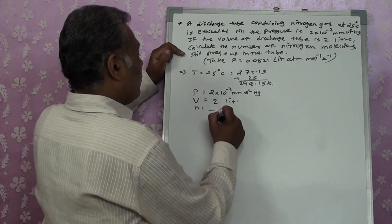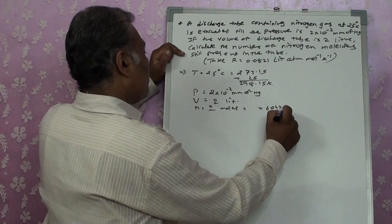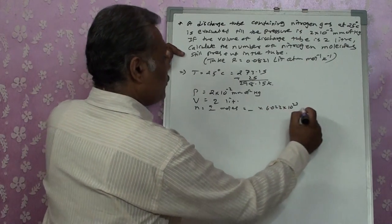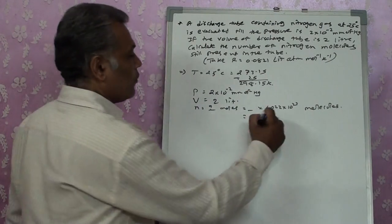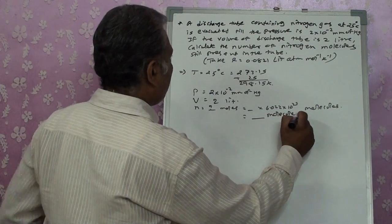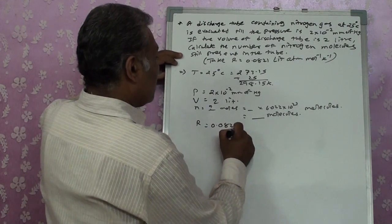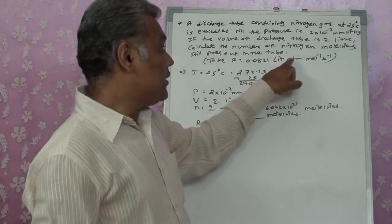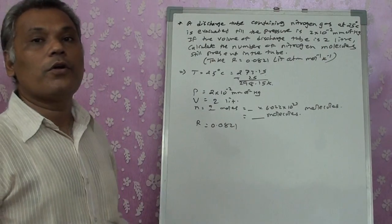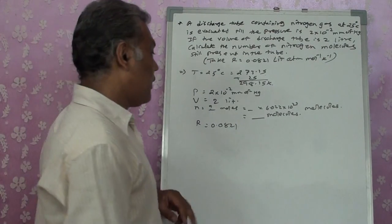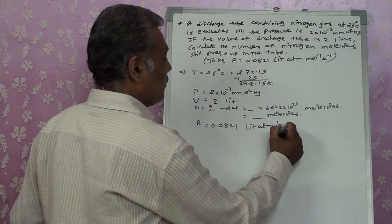First we find moles, then multiply by 6.022 × 10²³ to get molecules. The value of R given here is 0.0821 L·atm/mol·K, so pressure must be converted to atm, not bar. The relation is 1 atm = 760 mmHg. Therefore, P = 2 × 10⁻²/760 atm.